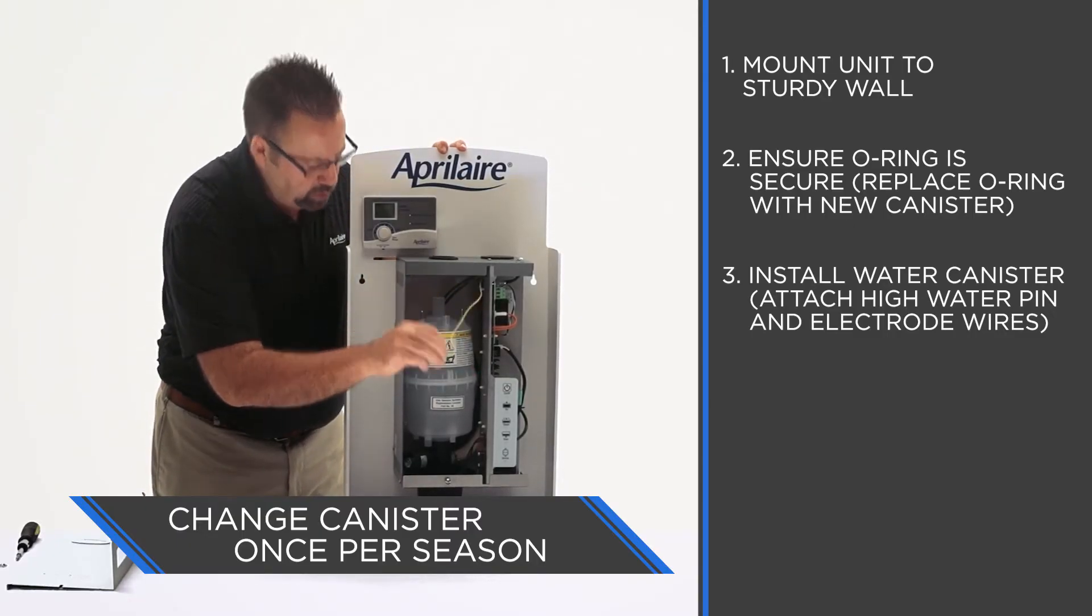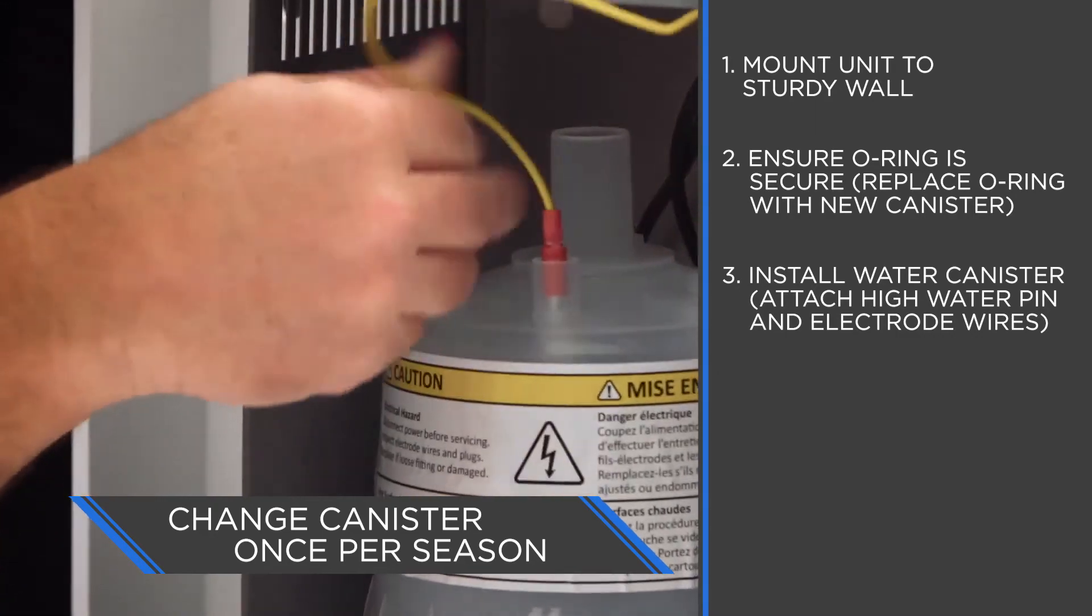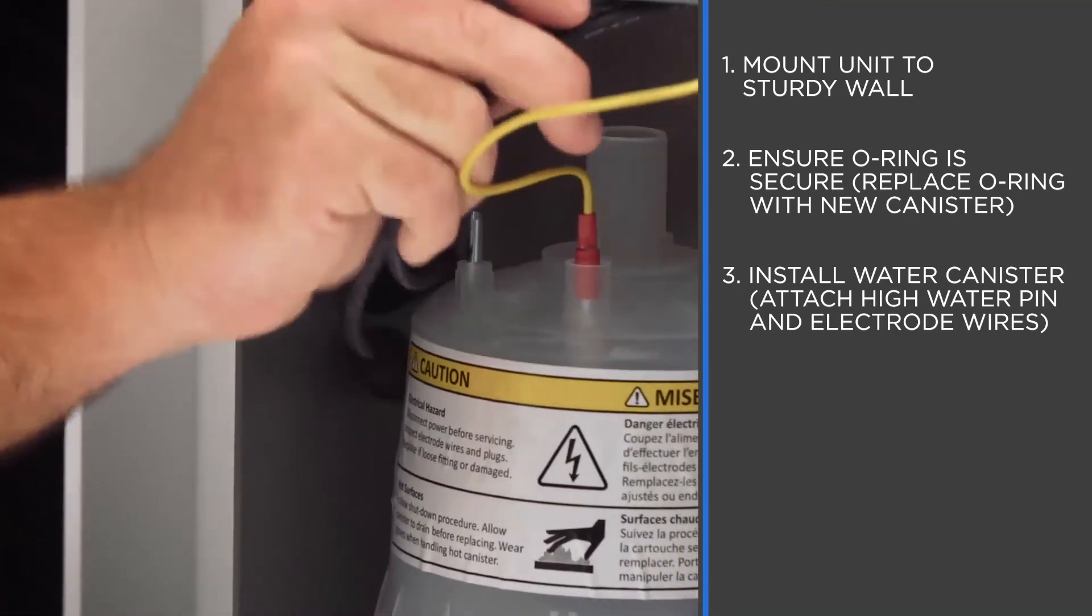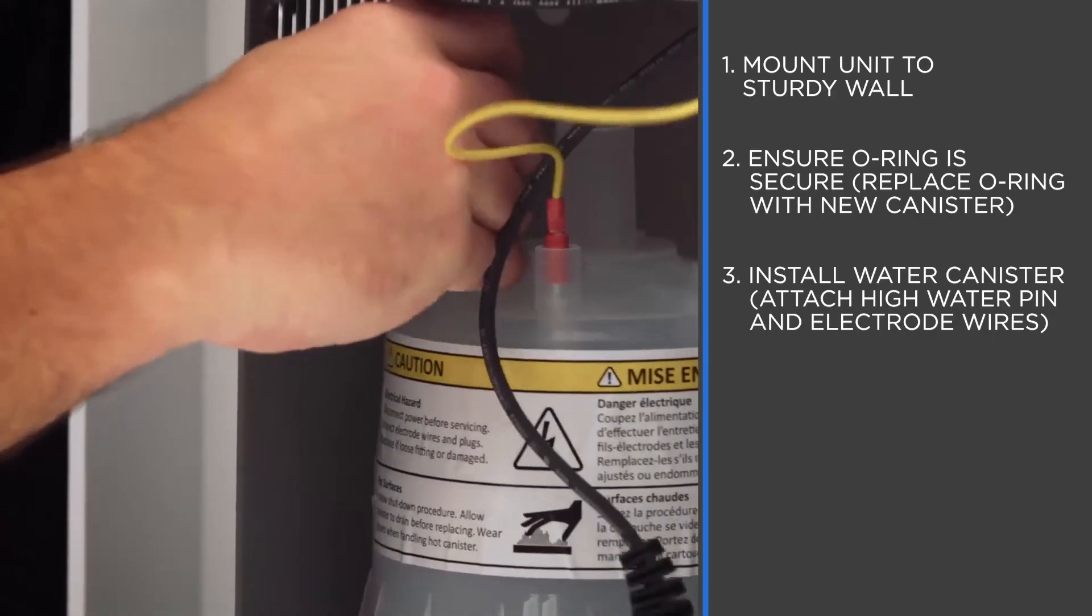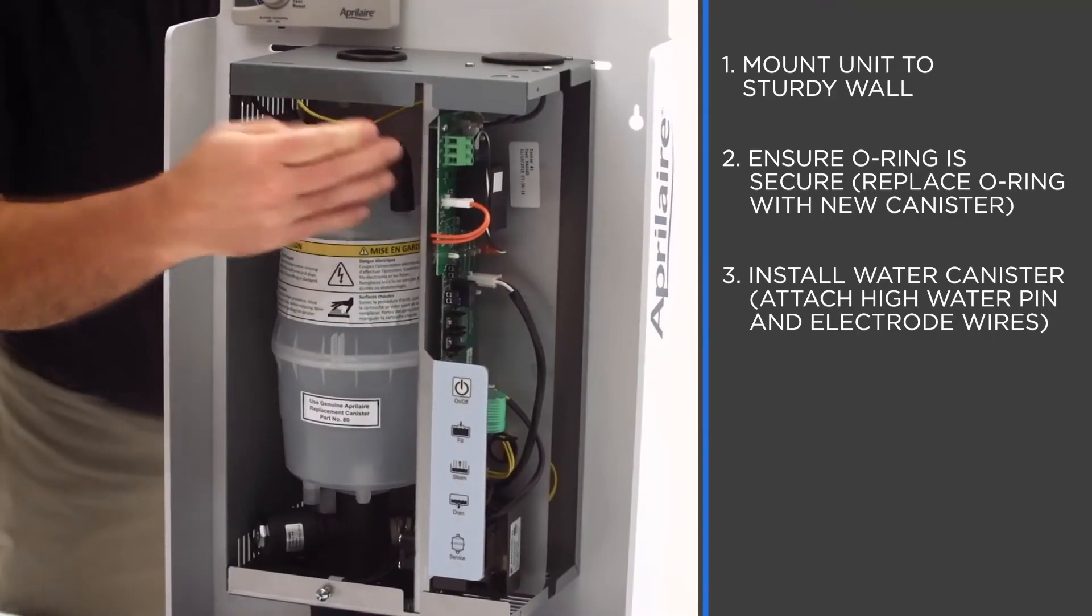I'm going to reattach the high water pin to the front pin. Then we have our two electrode wires and again it doesn't matter which one goes where, just attach them in. Push them all the way down so they're nice and secure.